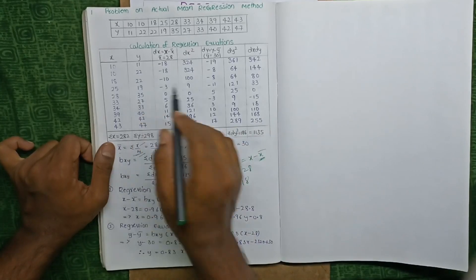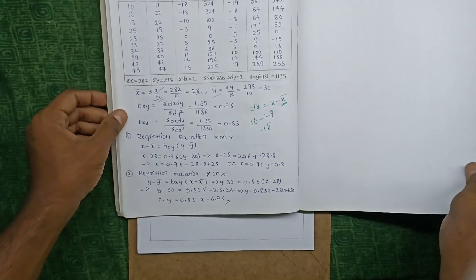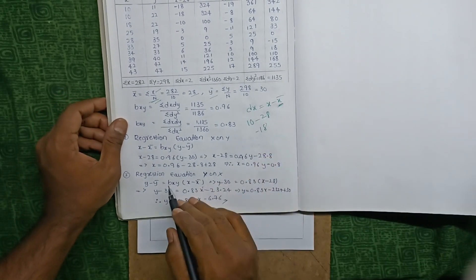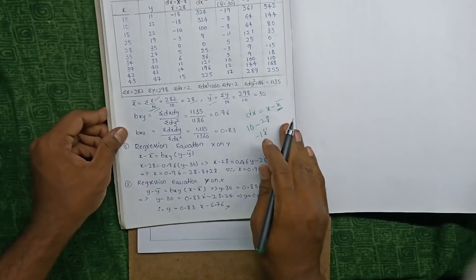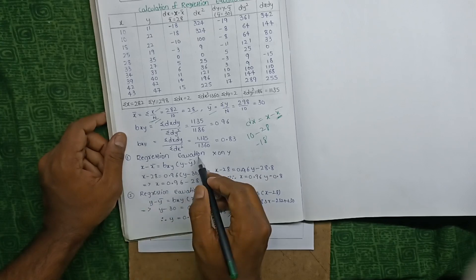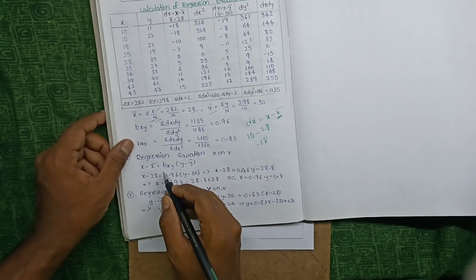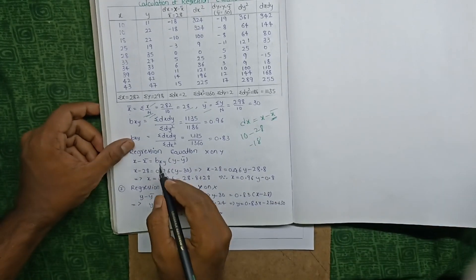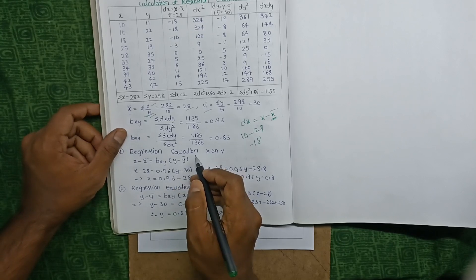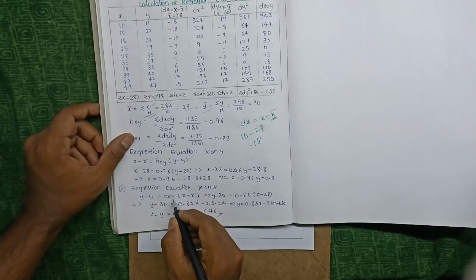After doing all this, you can go for the regression equations of x on y and y on x. The regression equation of x on y is: x minus x̄ equals bxy times (y minus ȳ). To get the values of bxy and byx, we use specific formulas.